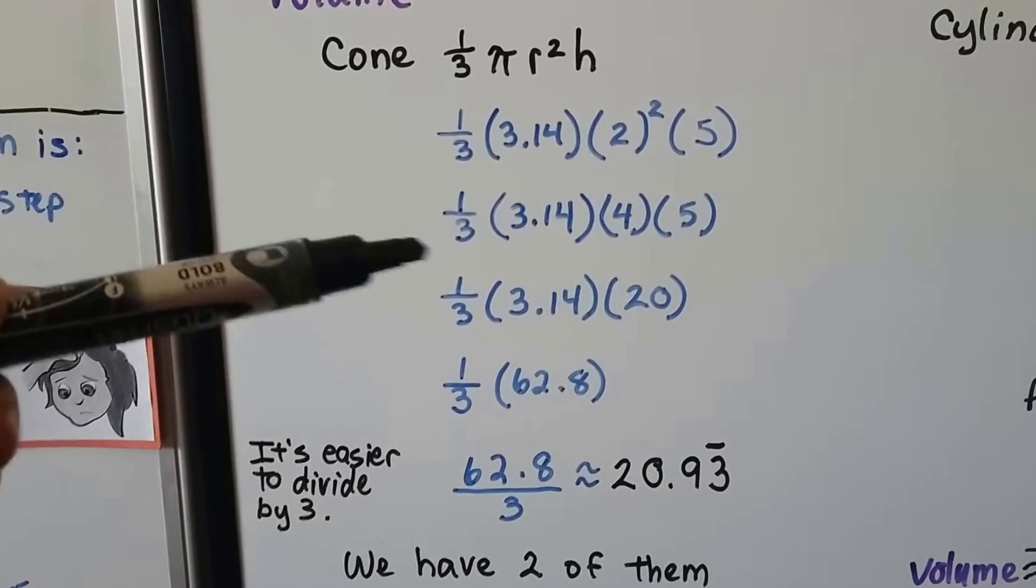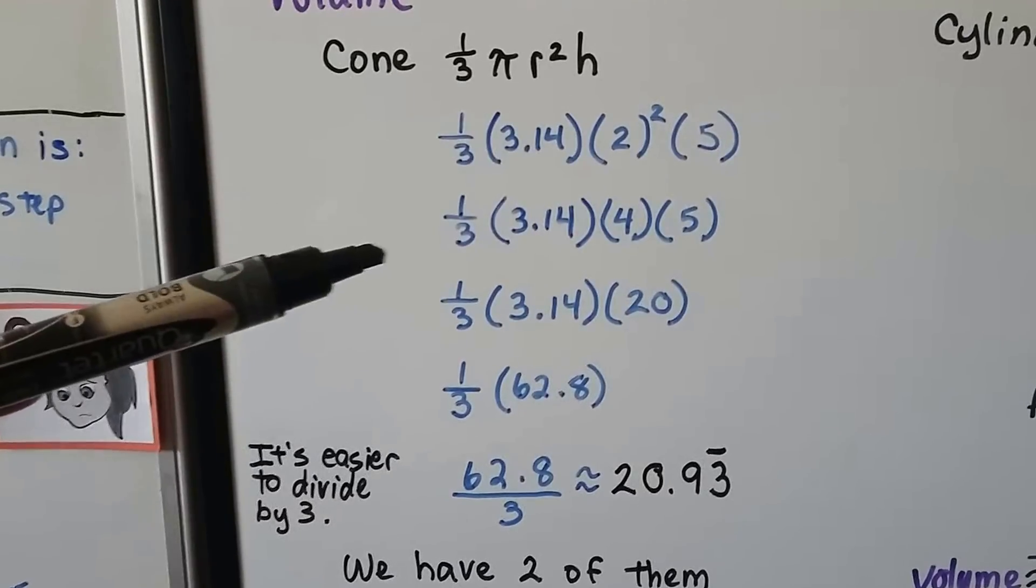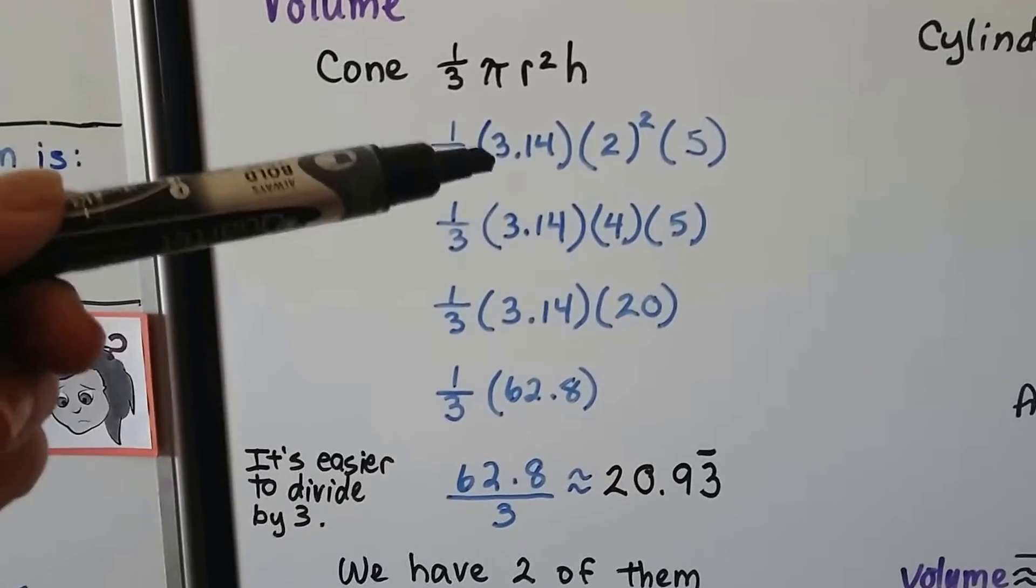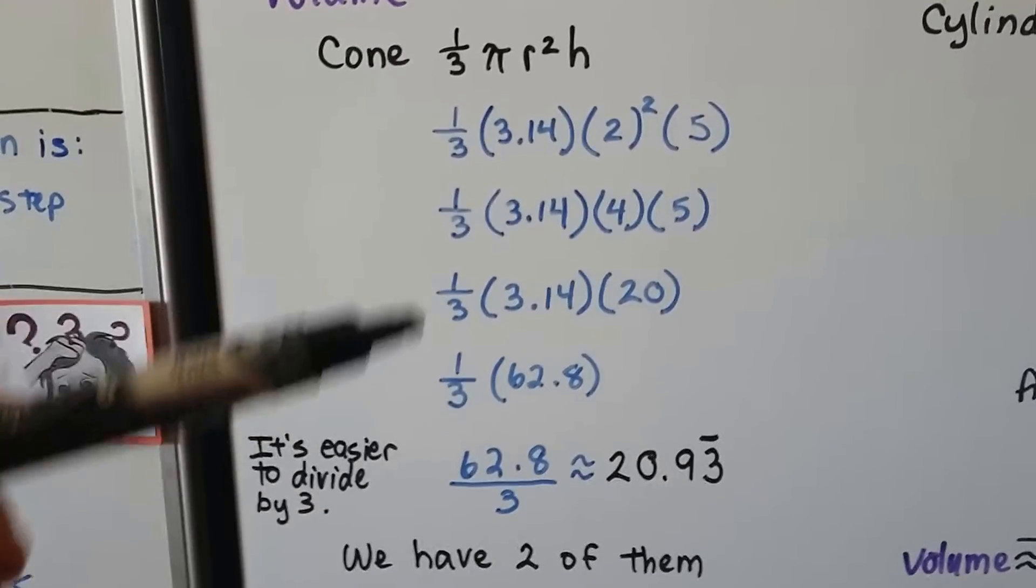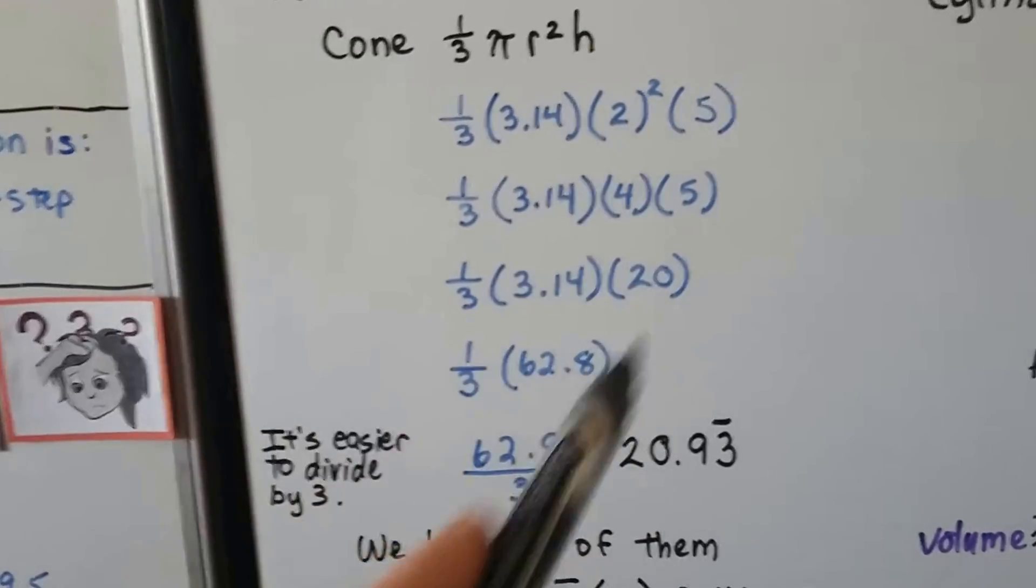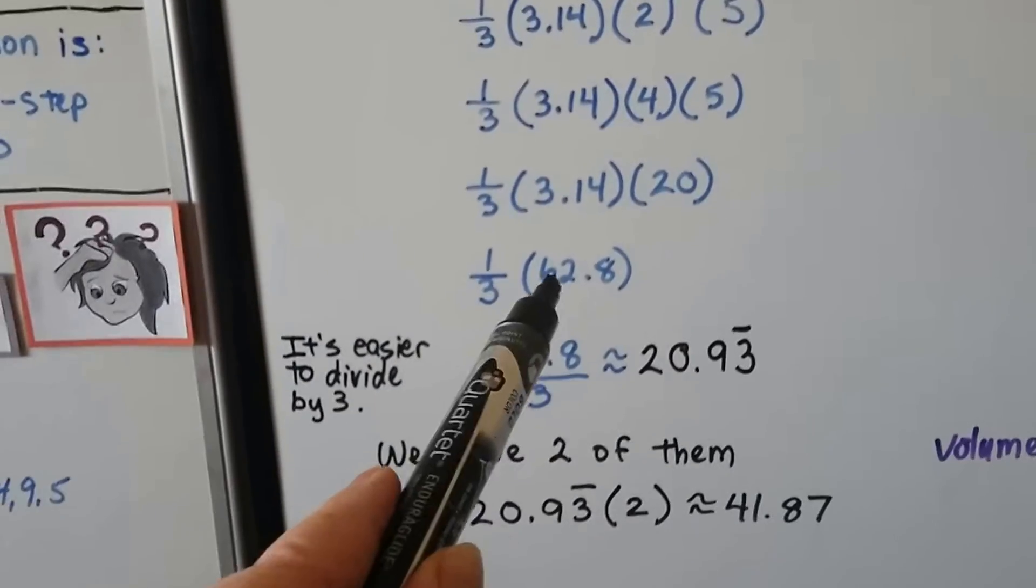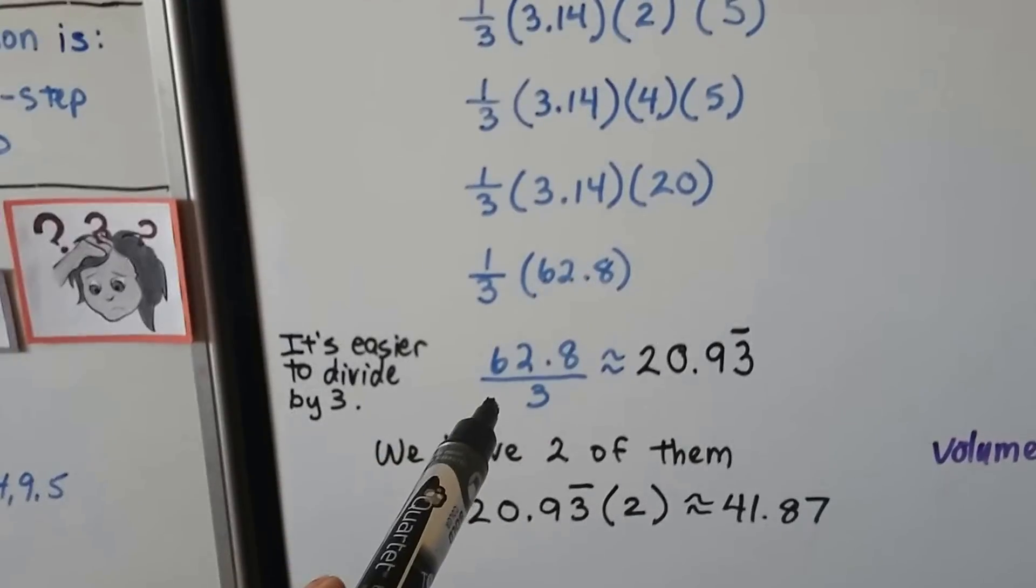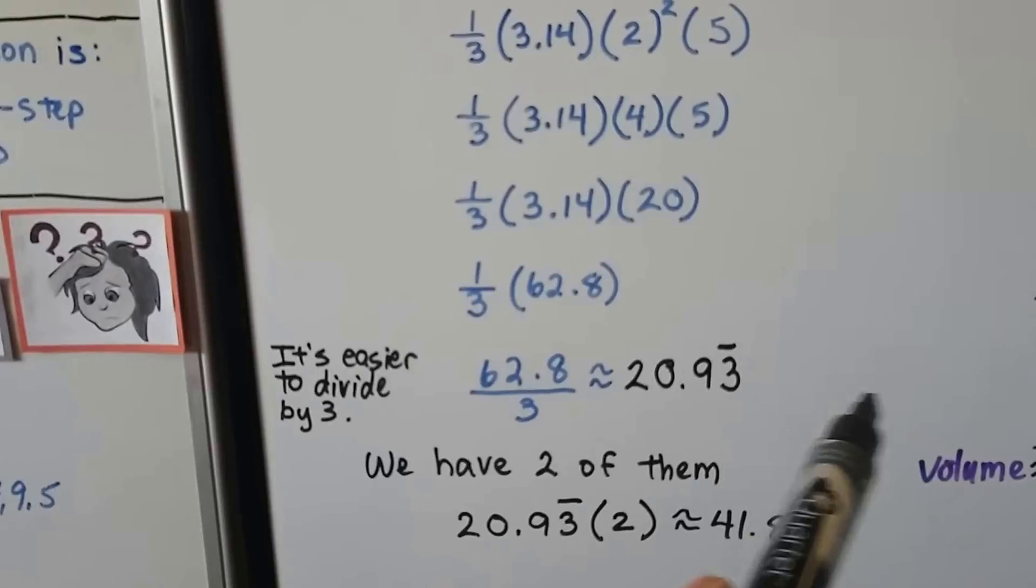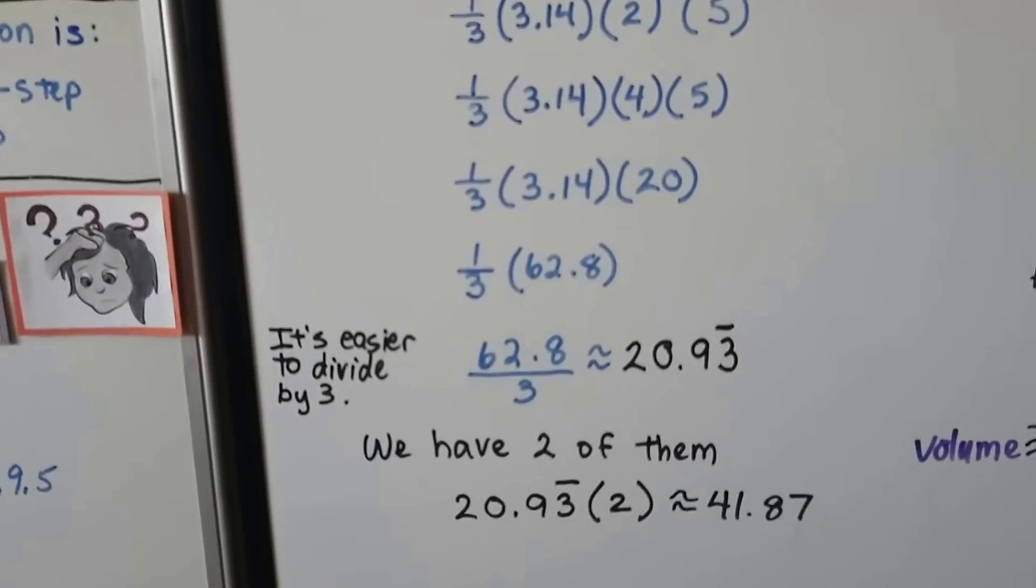When it's an even number like 2, 4, 6, that's kind of easy, but you could still divide it. If it's half, you could still divide it by 2 or a fourth divide it by 4. When I see this 1 third, I find all of these measures and multiply them together, and then I just divide this by 3. That's going to give me 20.93333, so I put the bar over the top of the 3.